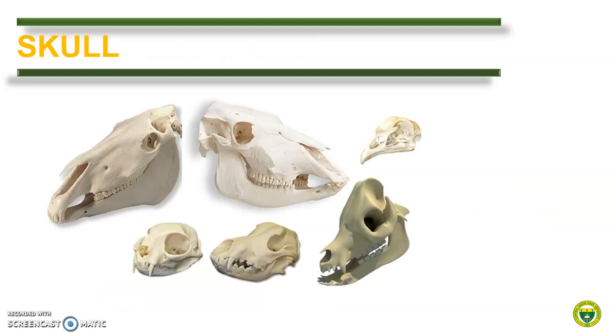Let us begin comparing the skull. As you can see, morphological variation is very distinct. Different animals have different appearances of the skull. Obviously, the two large skulls are from either a horse or from a large ruminant, and the rest are from a cat, dog, pig, and chicken. This is from a horse, and this is from a polled cattle. This is from a cat, from a dog, and from a pig. And lastly, this is from a chicken.